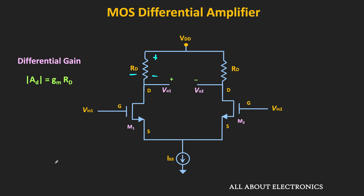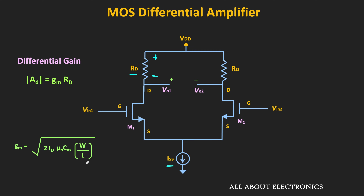On the other end, the transconductance of the MOSFET can be increased either by increasing the bias current or drain current, or by increasing the W/L ratio. By increasing the bias current, the power consumption of the circuit will increase. By increasing the W/L ratio, the overall area required by the amplifier circuit will increase. That means practically, just by tuning these parameters, it is not possible to increase the gain of this differential amplifier.